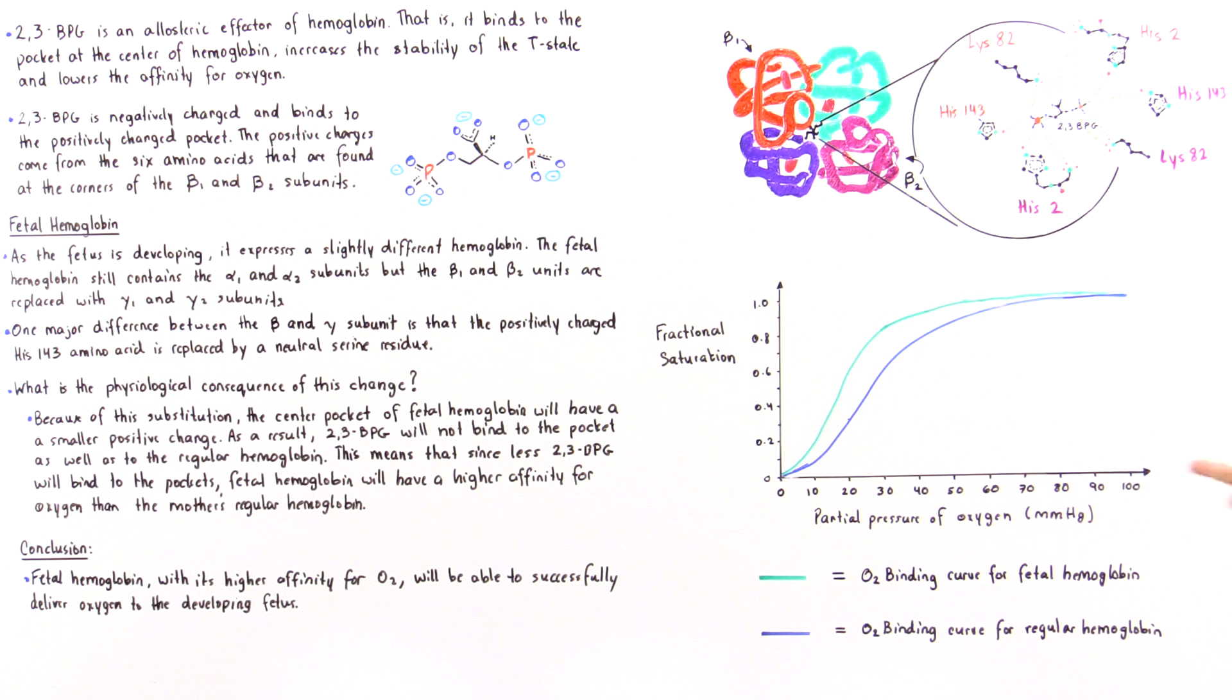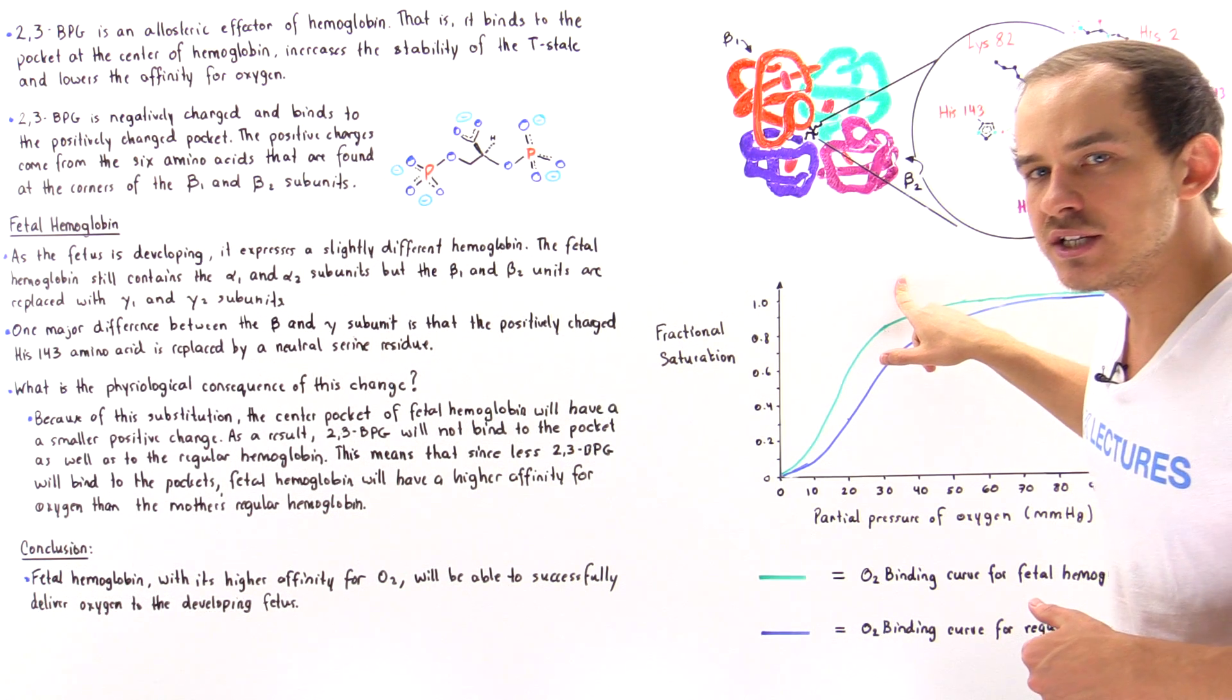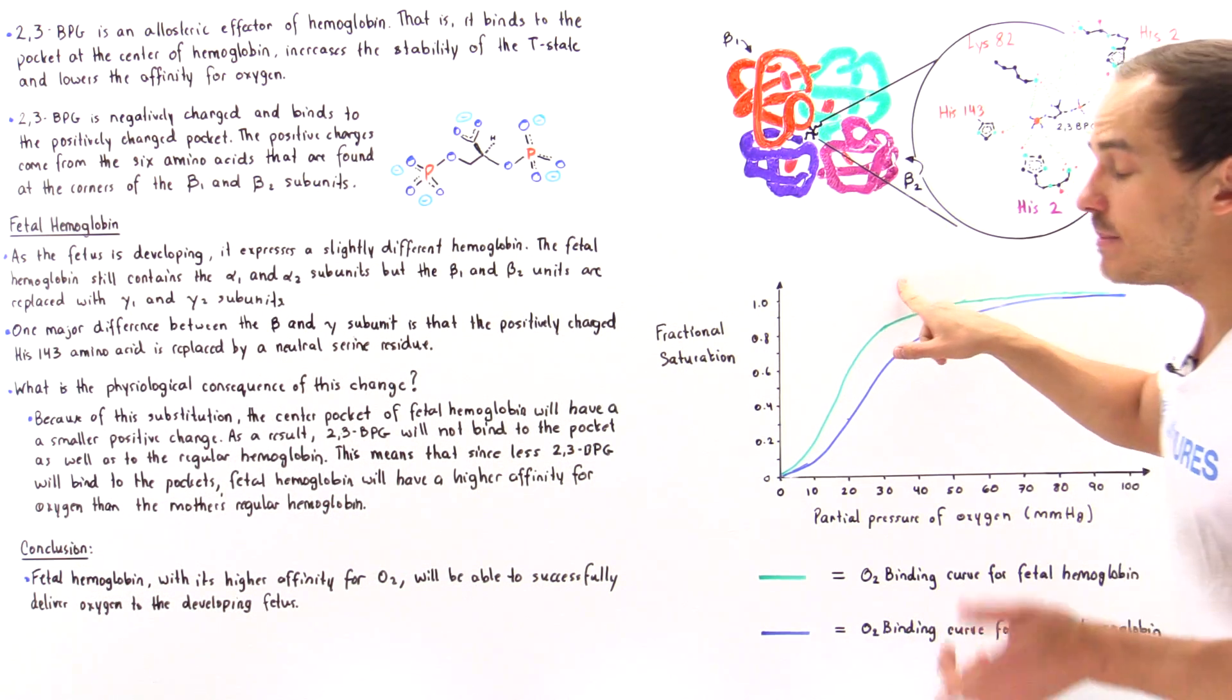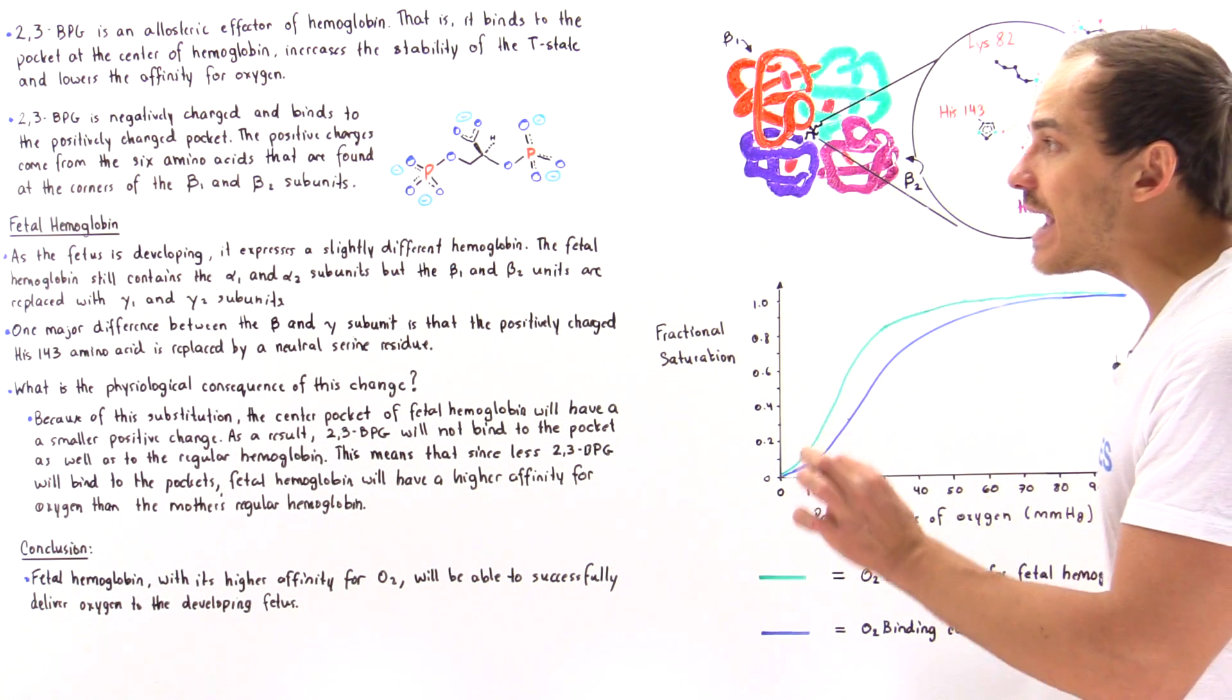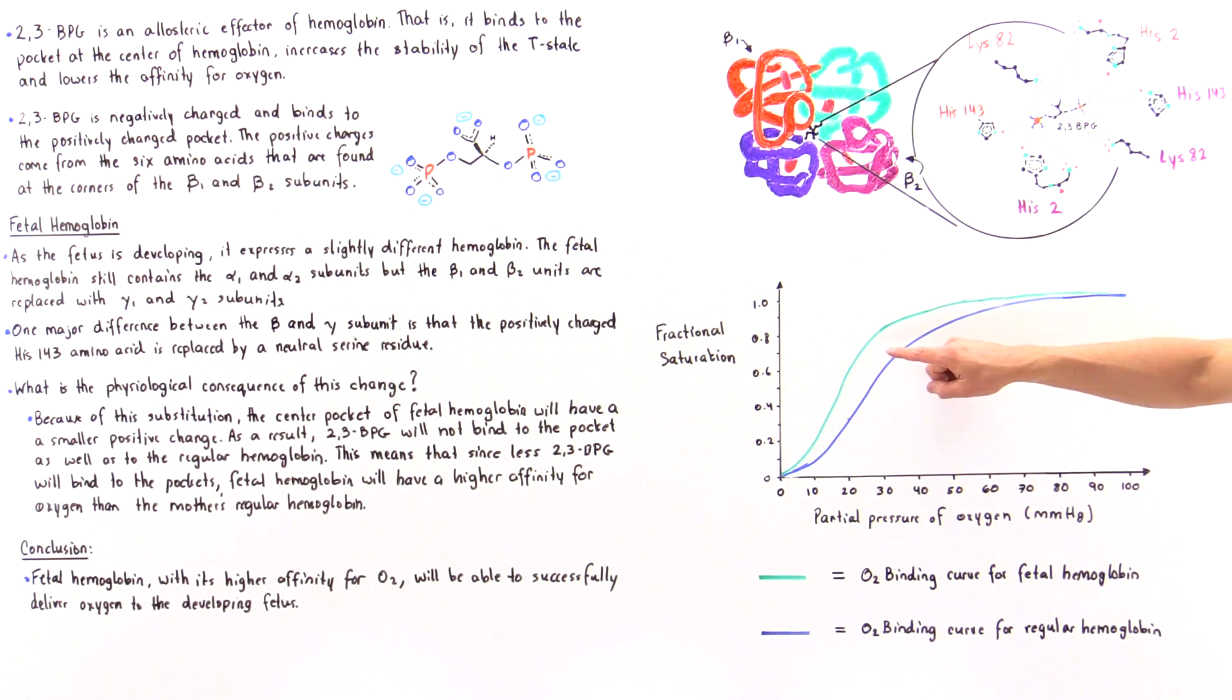We see that our blue curve is shifted to the right with respect to the green curve. That makes sense because the blue curve, the regular hemoglobin, has a slightly lower affinity than this green curve, than the fetal hemoglobin.